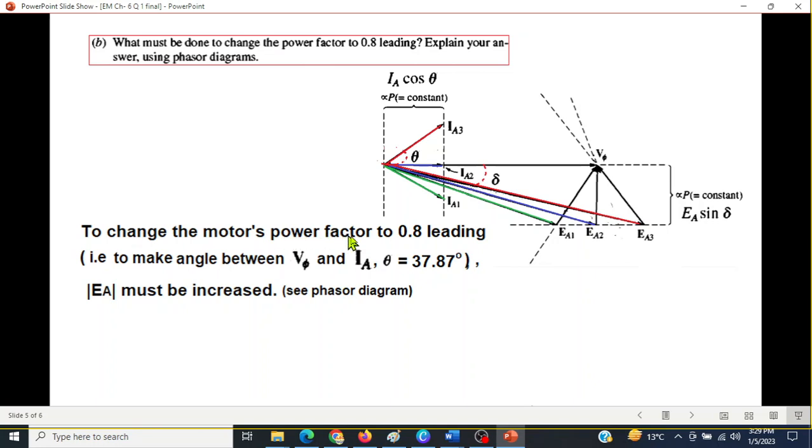To change the motor's power factor to 0.8 leading, that is to make an angle between VT and IA, that is theta equal to 37.87 degrees, EA must be increased. We saw that we have to keep on increasing EA, the length of EA is increasing. Now this is the formula for EA: EA is equal to some constant K multiplied by the flux phi and multiplied by the speed.